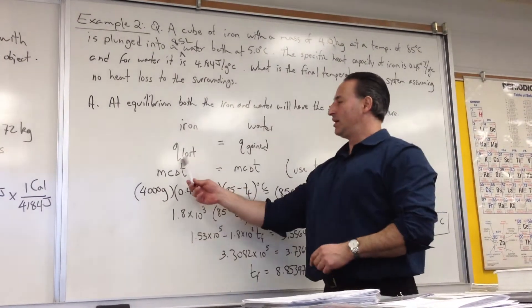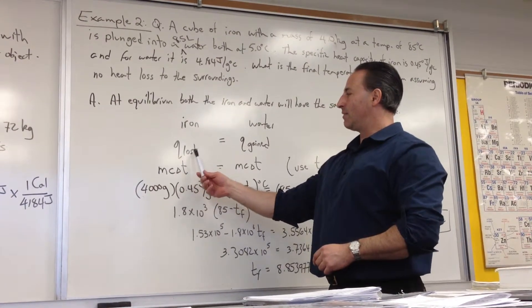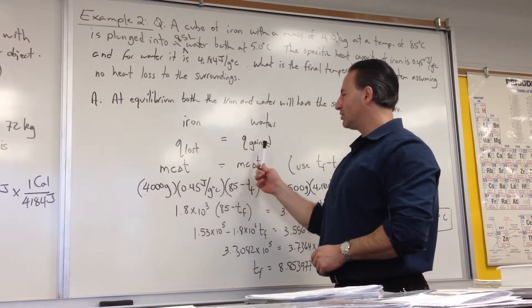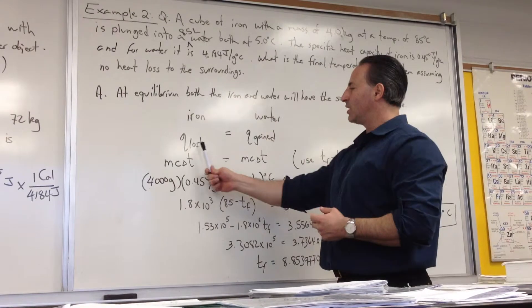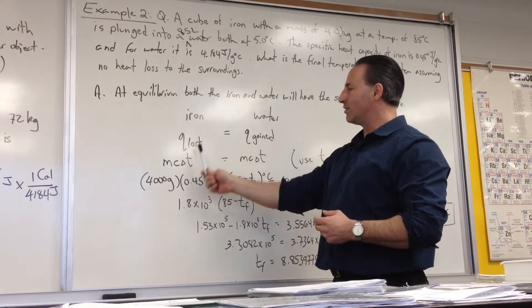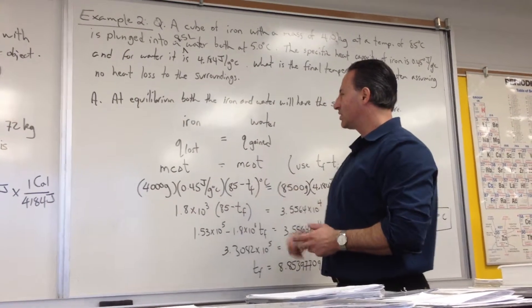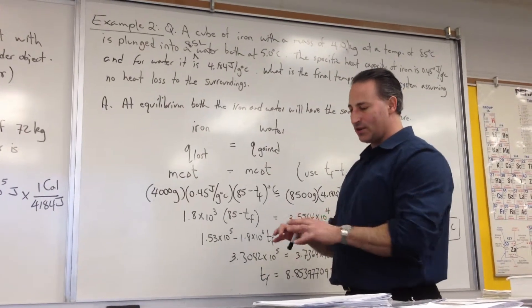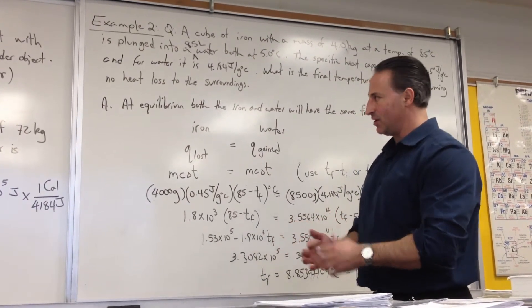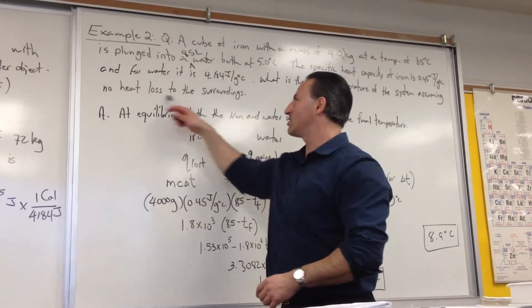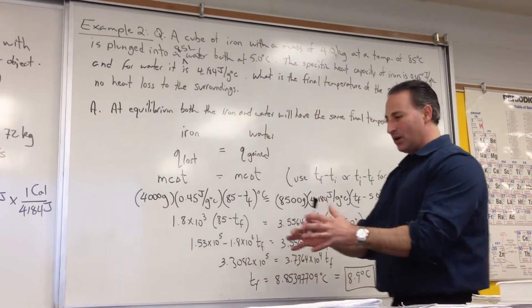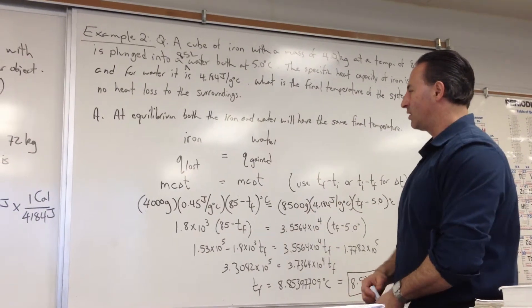Meaning that the heat loss by the iron is going to be equal, well not meaning, but as well as that consideration, we have to add that the heat loss by the iron is going to equal to the heat gained by the water. All that heat energy is still going to remain within the system. That's why we say no heat loss to the surroundings. We're assuming that the system, all this happens within the system with no heat loss to the surroundings at all.